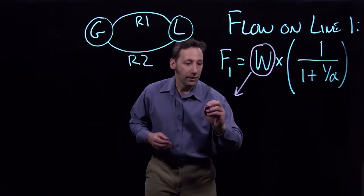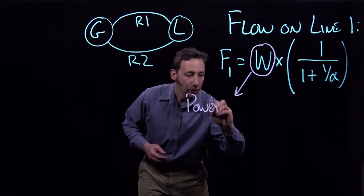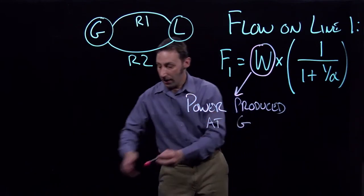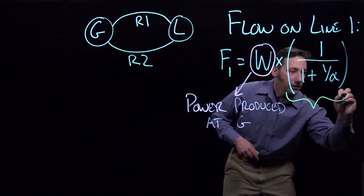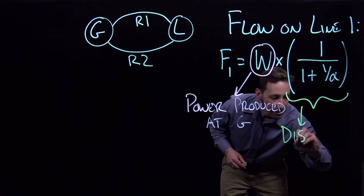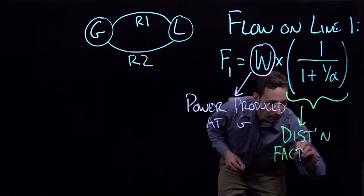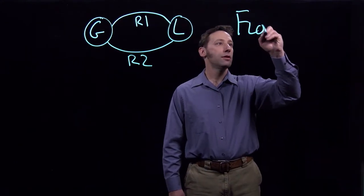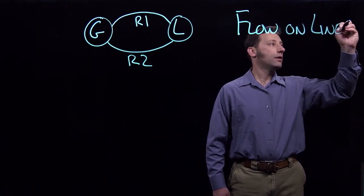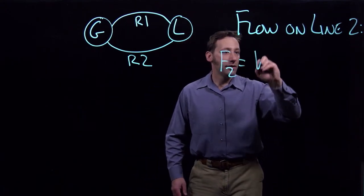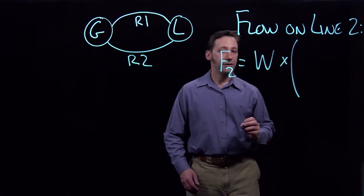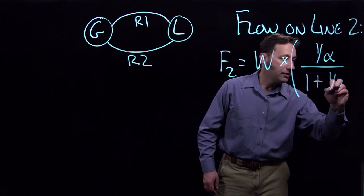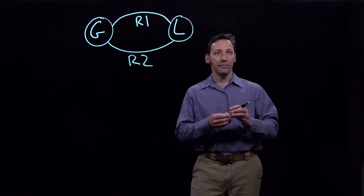In this equation, w is the power produced at the generator, and this term is just the distribution factor for line one. The flow on line two is going to be the amount of power produced at the generator times the distribution factor on line two, which is one over alpha divided by one plus one over alpha.